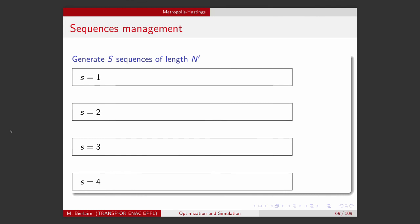So how do we manage the sequences of draws that we will generate? So the idea here is to generate several sequences of draws. So here I have capital S equals 4. I generate 4 sequences of draws, and each of them has a length, let's say, n prime. n prime can be 1 million, whatever.